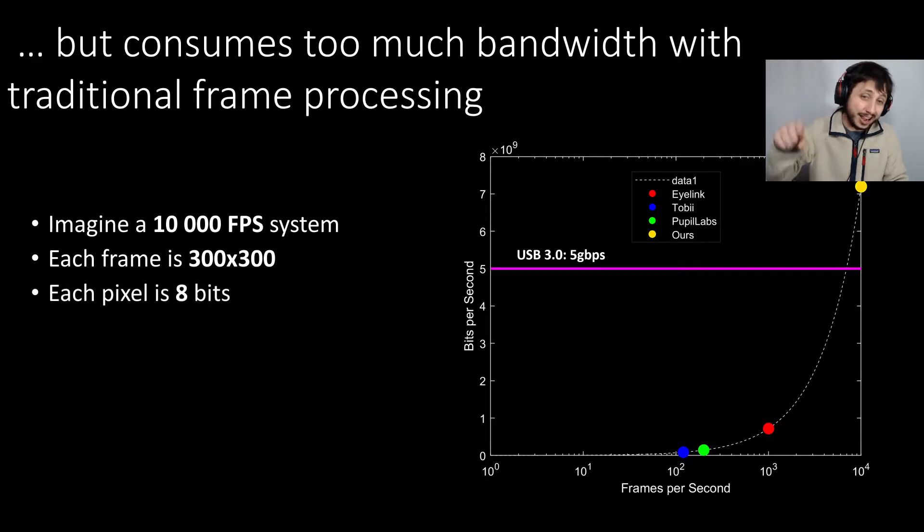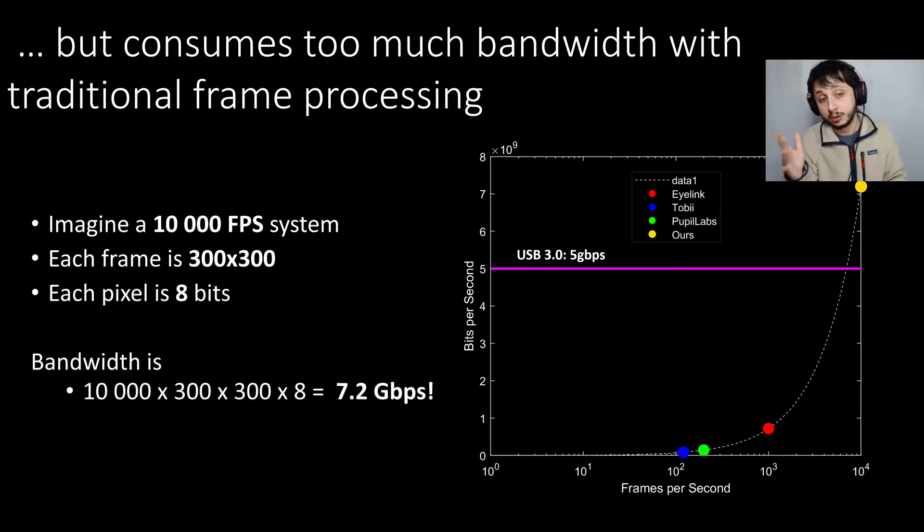But the problem is if you were to try to build a system that samples fast enough to basically capture those movements at Nyquist. So if you built like a 10,000 frames per second system where each frame were 300 by 300 pixels and each pixel were 8 bits, well then, if you just multiply those numbers out, that gives you a data rate of 7.2 gigabytes per second, which is more data than USB 3.0 can even carry. So the data rate is crazy here, which means that we need a sensor that doesn't capture as much data if we want to make this work with reasonable hardware.